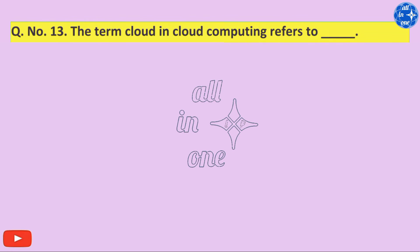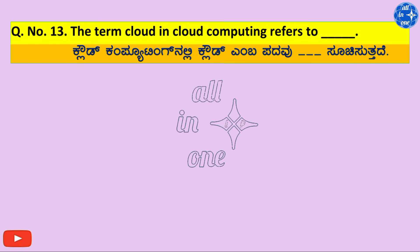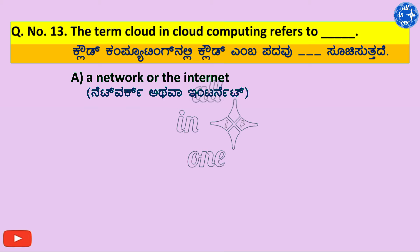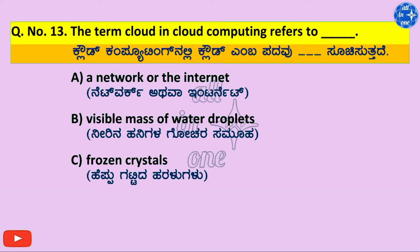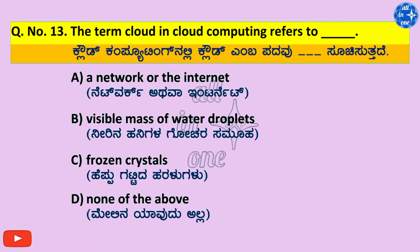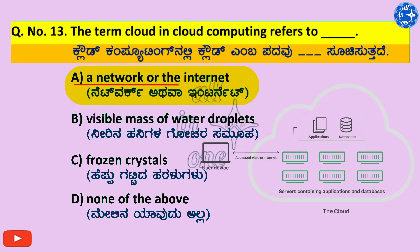Number 13. The term cloud in cloud computing refers to dash. Options: A. Network or the internet, B. Visible mass of water droplets, C. Frozen crystals, D. None of the above. Right answer is A. Network or the internet.